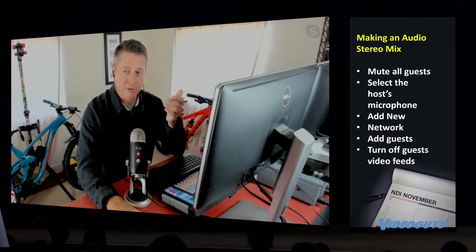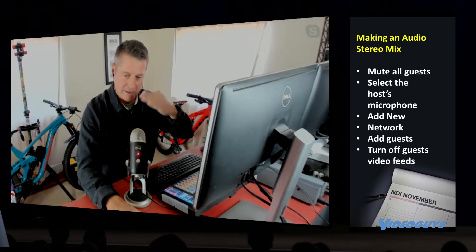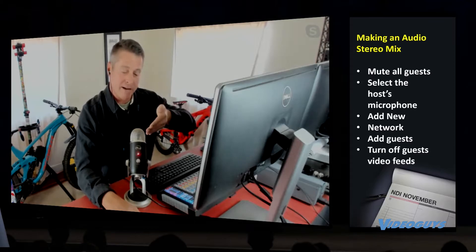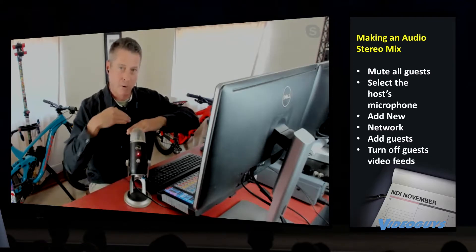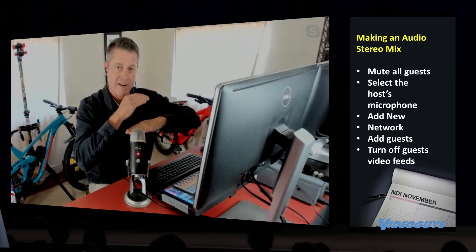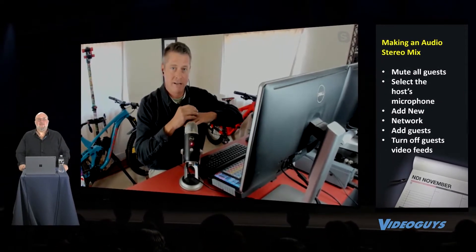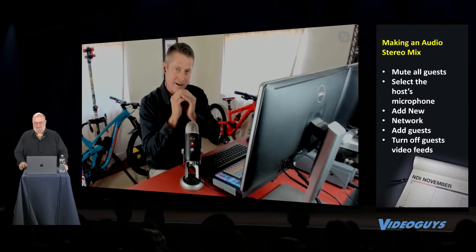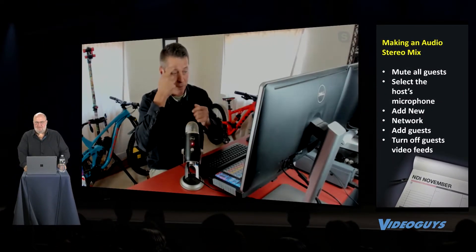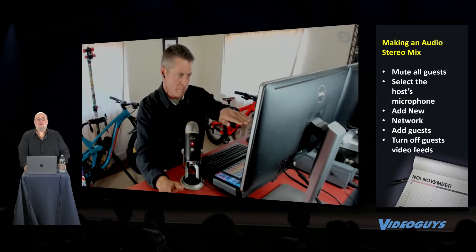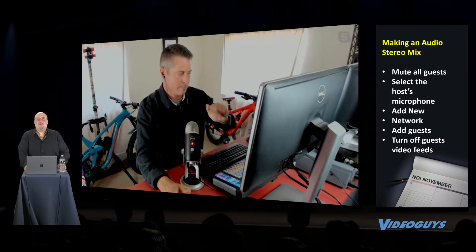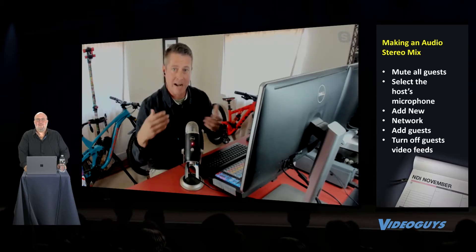What I could do is on a layer below, add my mic, go to the source properties and layers, and re-add Ryan, Greg, and Sean. Now I have a stereo mix of everybody. What I can do is mute their original sources so there's no looping. And now I have a stereo mix of everybody and I can just produce the show as they're talking.